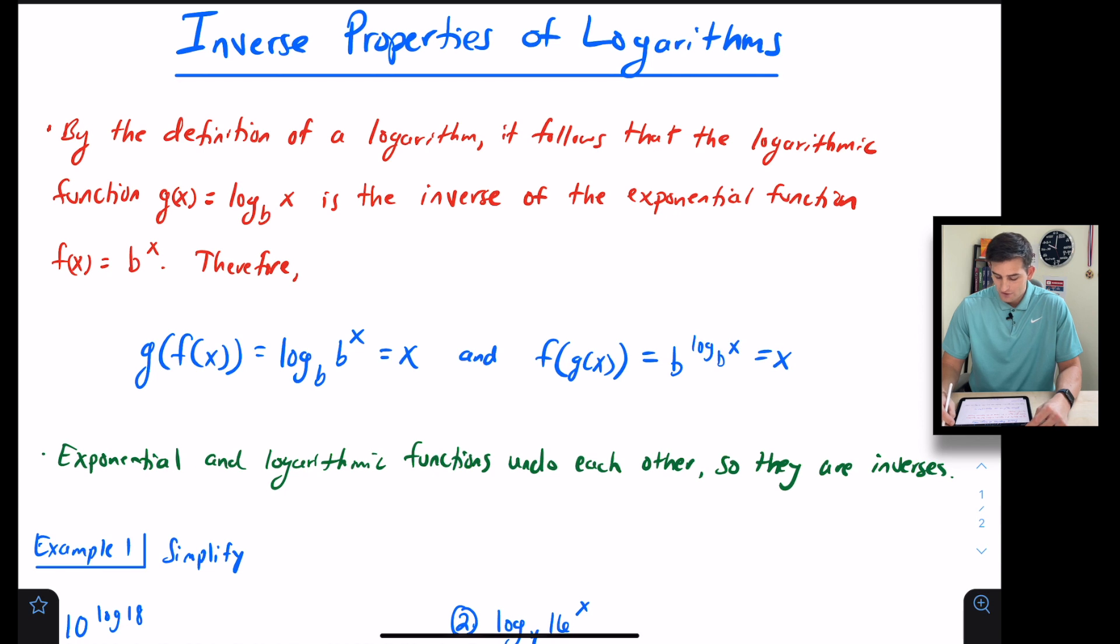And f(g(x)) we have b to the log base b of x equals x. Once again, b to the log base b would cancel out. Essentially, exponential and logarithmic functions undo each other, so they are inverses. What's the inverse of an exponential function? A logarithmic function.